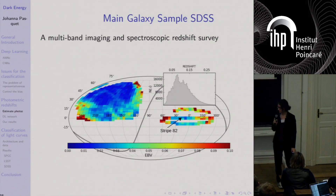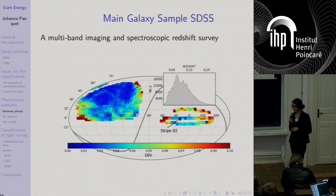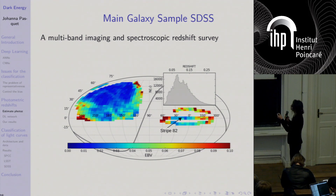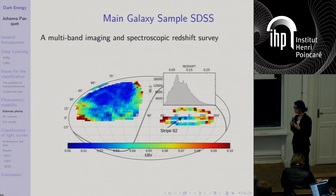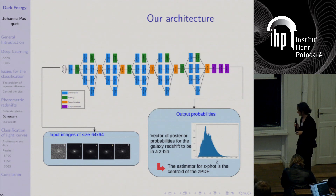The data we use are the main galaxy sample of SDSS. The distribution of spectroscopic redshift peaks at 0.1 and is not flat. I point out the important region Stripe 82, where the sky was observed several times so image quality is higher than in other parts — it will be interesting to compare the CNN performance on this region.